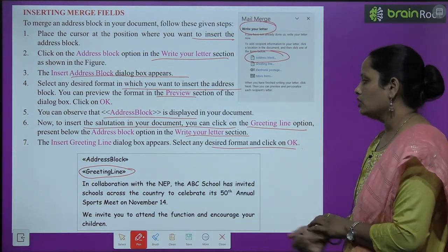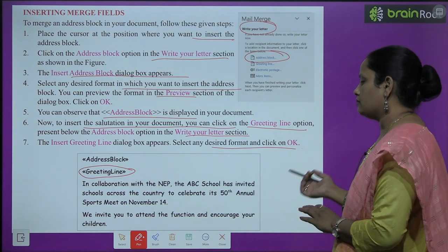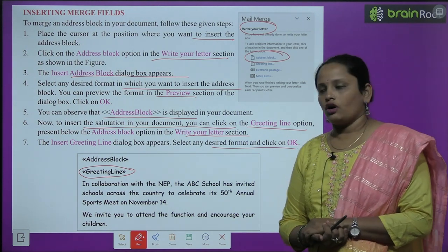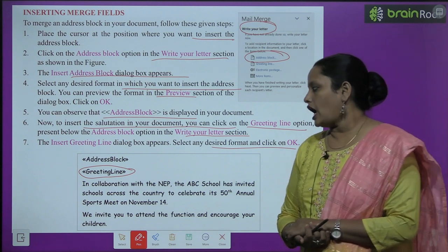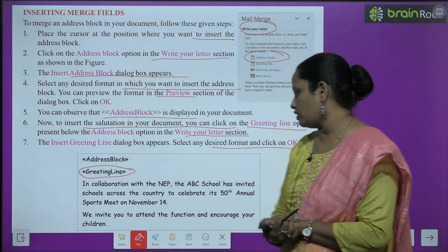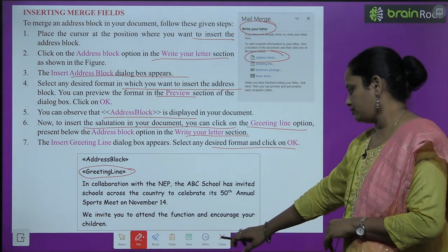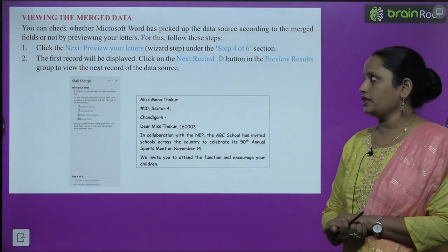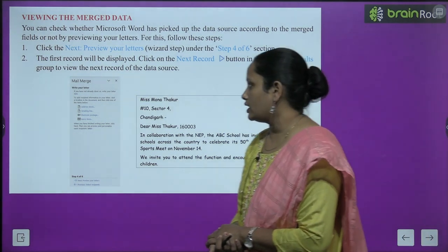The letter contains: In collaboration with the NEP, ABC School has invited schools across the country to celebrate its 50th Annual Sports Meet on November 14th. We invite you to attend the function and encourage your children. This is the letter that you are sending.